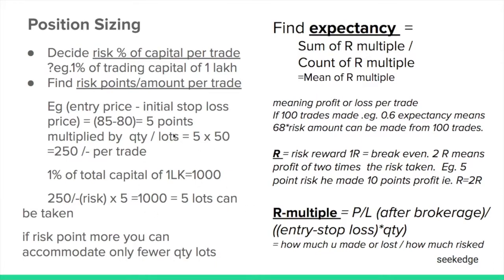This is what position sizing is fundamentally about. Position sizing also needs to be analyzed and optimized from the trading journal based on trade outcomes. Now, coming to expectancy and performance parameters: expectancy is the sum of all R-multiples divided by the count of R-multiples. Let's first understand what R is, then what R-multiple is, and then what expectancy is.